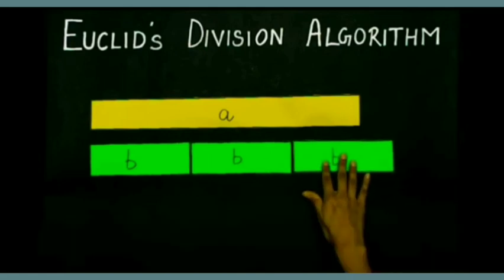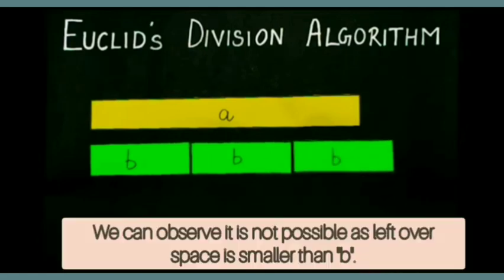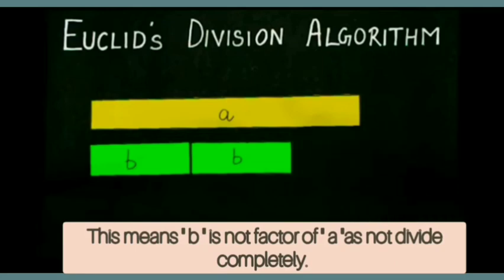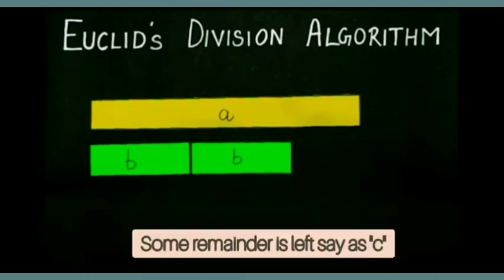Try to take out one more B from A. But we can observe that it is not possible as leftover space is smaller than B. Means B is not a factor of A as it does not divide completely.